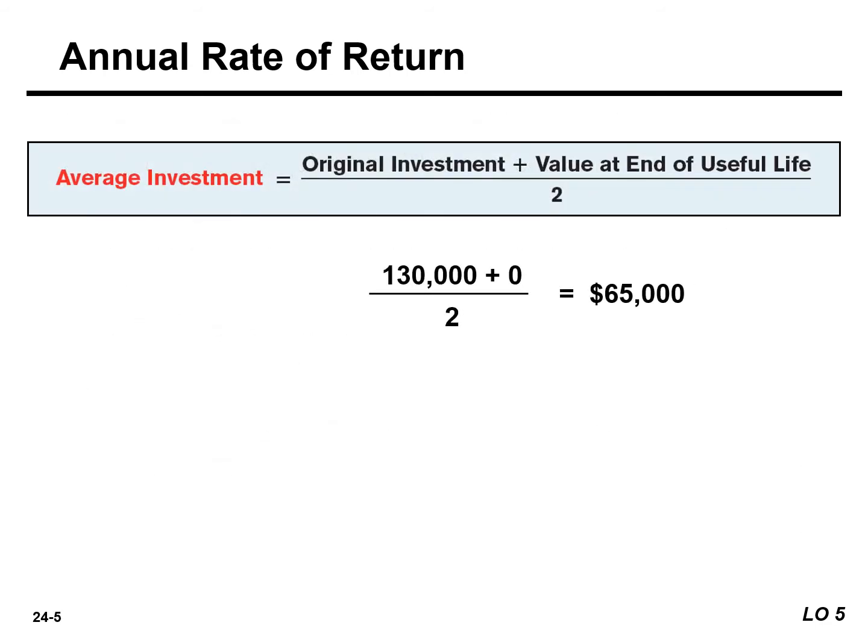The value at the end of the useful life is equal to the asset salvage value, if any. For Reno, average investment is $65,000, and that is found by taking the original investment of $130,000, adding zero because there is no salvage value, and then simply dividing by two.